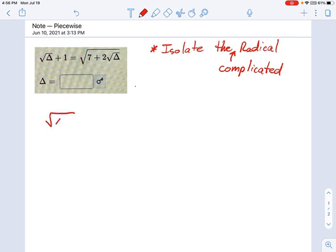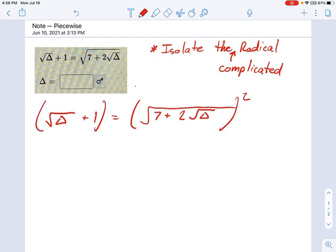So, we're going to take this equation and say square root of delta plus 1 equals the square root of 7 plus 2 radical delta inside the square root sign. And now we're going to square both sides. Square that, and I have to square the entire left side. Remember, we're squaring the entire side of each equation.